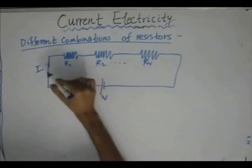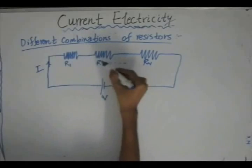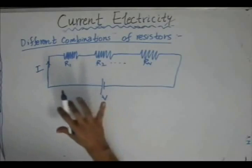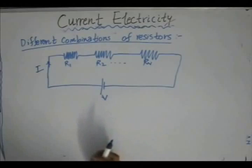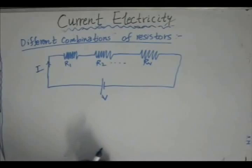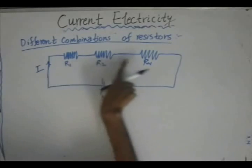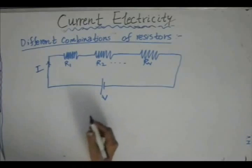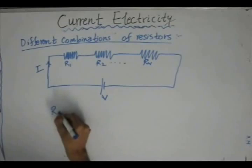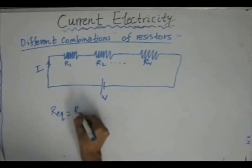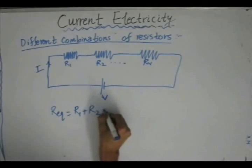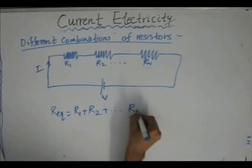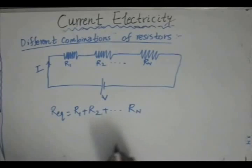That is, through R1 the current flowing is I, through R2 it is also I, and through Rn it is also I. So the condition for resistors to be connected in series is that the current flowing through each of the resistors is the same. In this case, the equivalent resistance of the circuit is R_equivalent = R1 + R2 + ... + Rn.